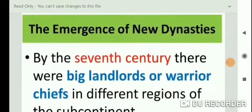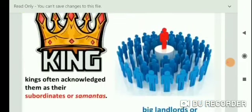The emergence of new dynasties: by the 7th century, there were big landlords or warrior chiefs in different regions of the subcontinent. Kings often acknowledged them as their subordinates or Samantas. Samantas means helpers for the king — providing support such as gifts and armies. Existing kings expected them to bring gifts to their overlords, be present at their courts, and provide military support.